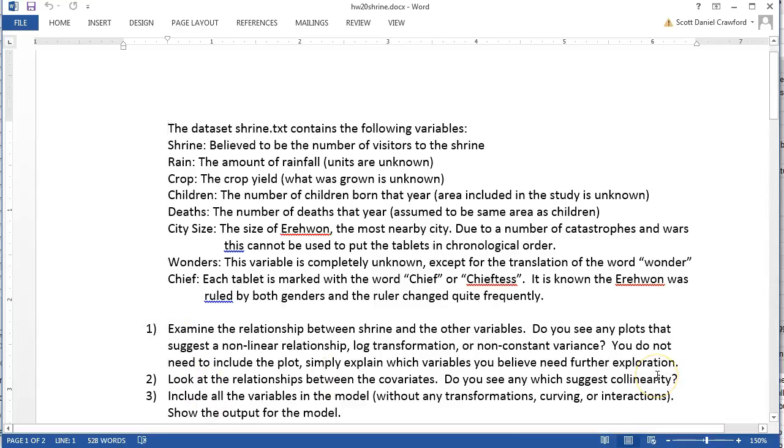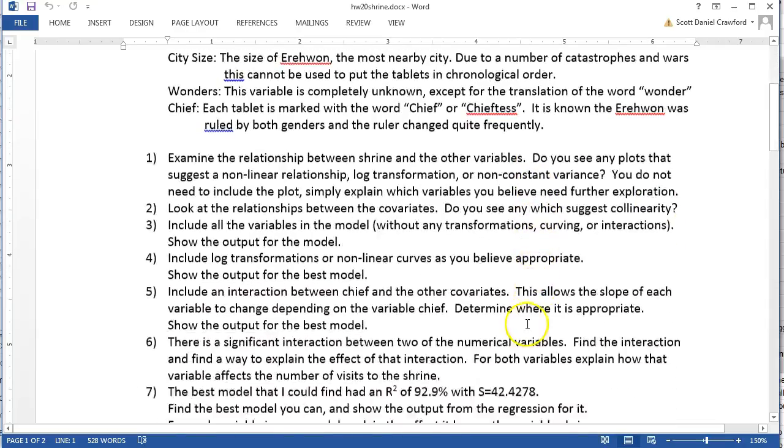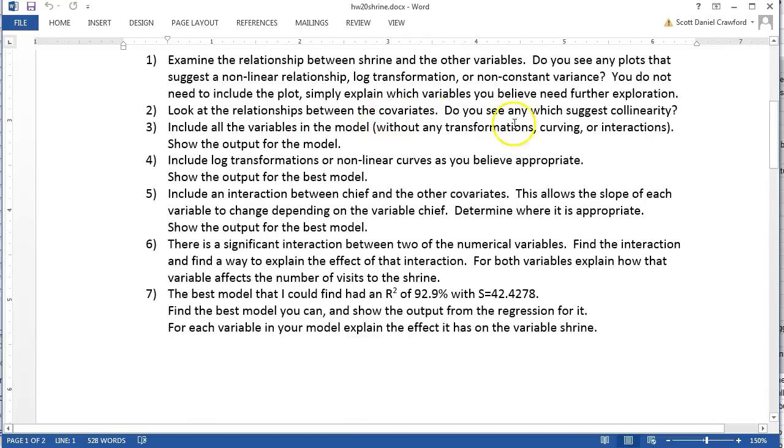Then take a look at the variables that way you'll see that there's some collinearity which tells you model selection is going to matter. Then put in all the variables without any transformation even though you've seen that they need some, and just show me that you can do the model. This is in other words show me that you can read in the correct data, and I'll give you a hint there might be some errors you're going to have to deal with.